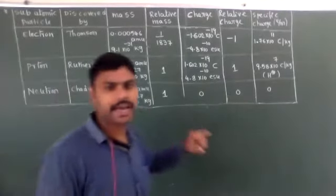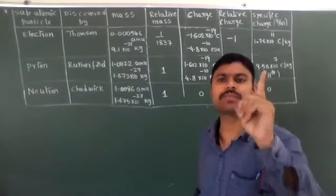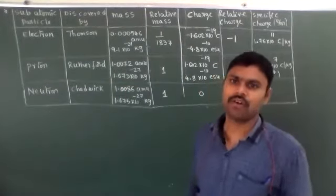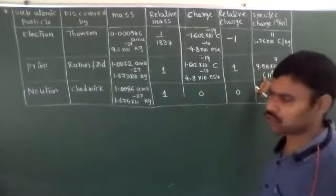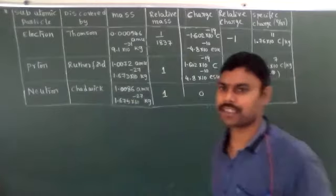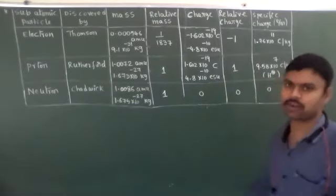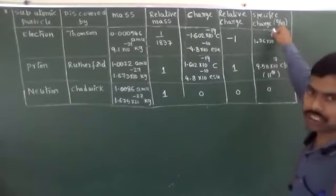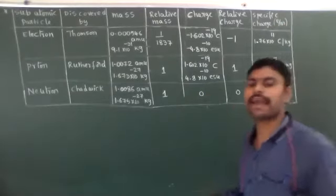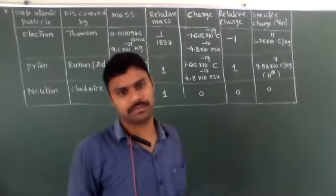The proton's specific charge depends on the nature of the gas present in the electric discharge tube. For hydrogen gas, its specific charge is maximum. Hydrogen ionizes to give H⁺ ions, which contain only one proton. So H⁺ ion specific charge is 9.58 × 10⁷ Coulombs per kg. Neutrons have zero charge, so their specific charge (E/M) is always 0.